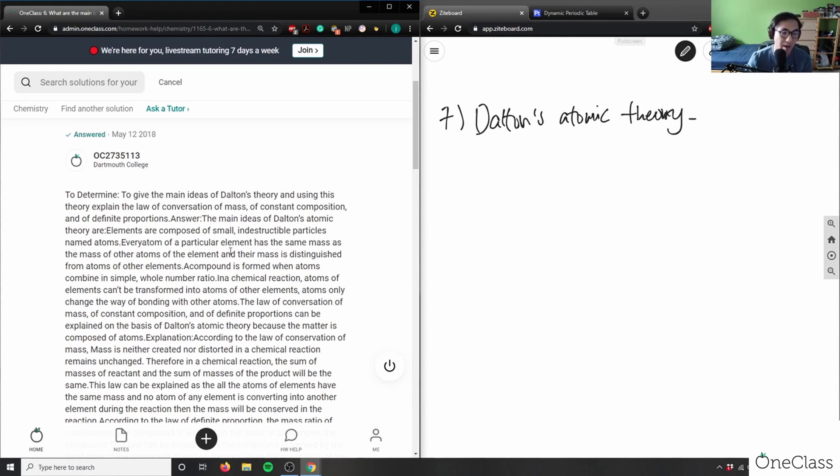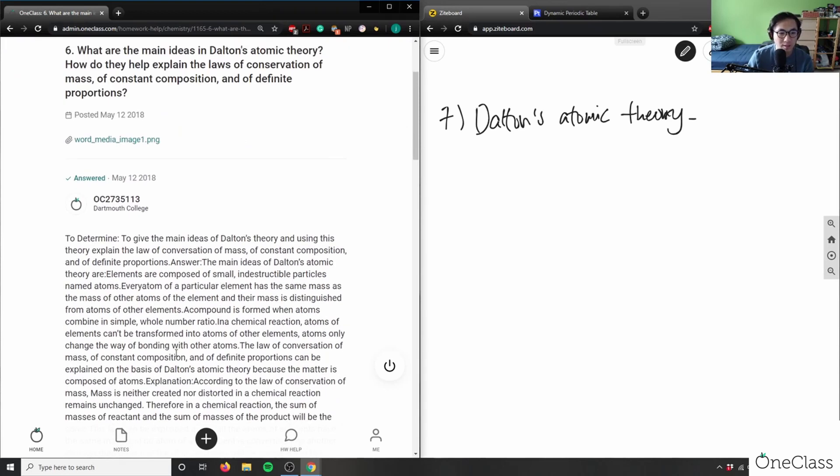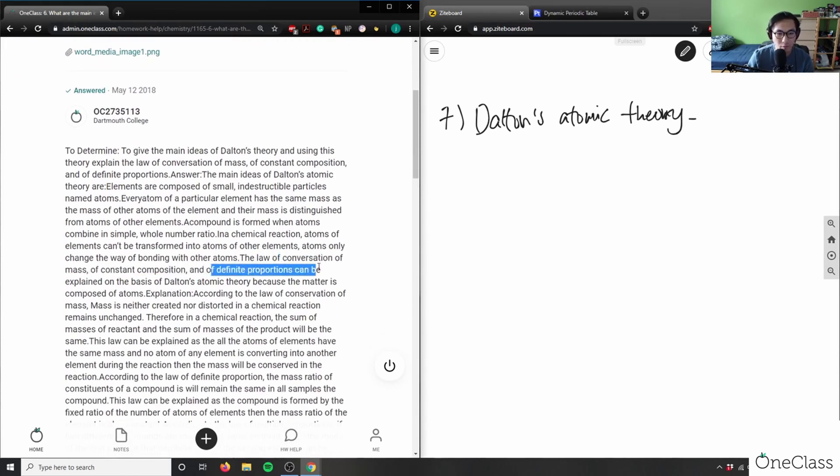Their mass is distinguished from atoms of other elements. A compound is formed when atoms combine in simple whole number ratios, so that's the law of definite proportions. The law of conservation of mass, constant composition, and definite proportions can be explained on the basis of Dalton's atomic theory.